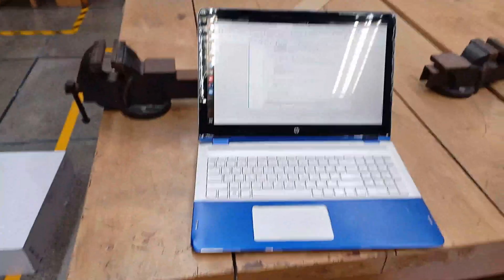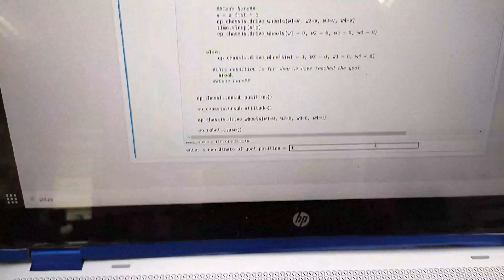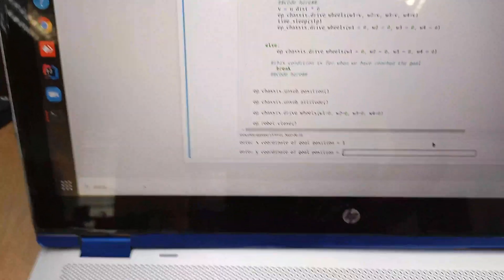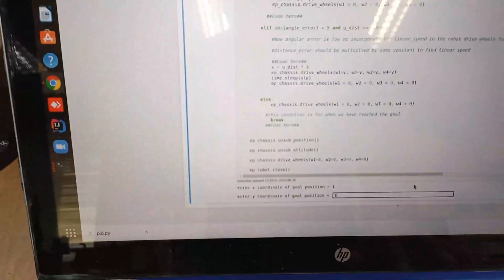So let's get started. If you want to give a specific coordinate to the robot so that it can move to that coordinate, for example I am giving it a value of one in the x-axis and one in the y-axis.